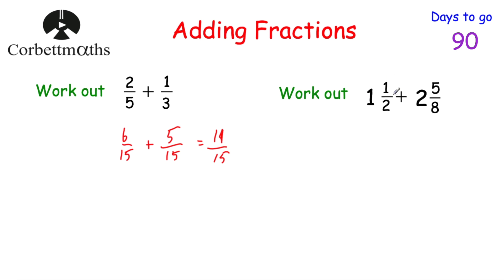Now let's have a look at adding mixed numbers. We've got: work out one and a half plus two and five eighths. If you feel confident with adding fractions, feel free to give these a shot yourself — but remember, I've got some questions for you to try in a minute anyway. So if we wanted to work this out, the first thing I would do is make both of these mixed numbers into top-heavy fractions. So if I had one and a half, that's one, which is two halves, and then another half, which would be three halves altogether.